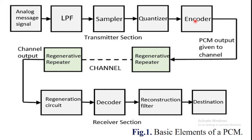The next block is the encoder. The digitization of the analog signal is done by the encoder — it designates each quantizer level with a binary code. The output of the quantizer is the quantized output, and the sample-and-hold circuit method is used to collect the data.